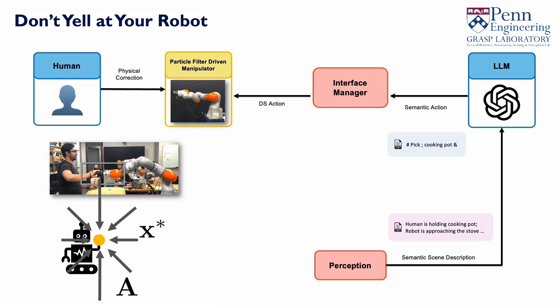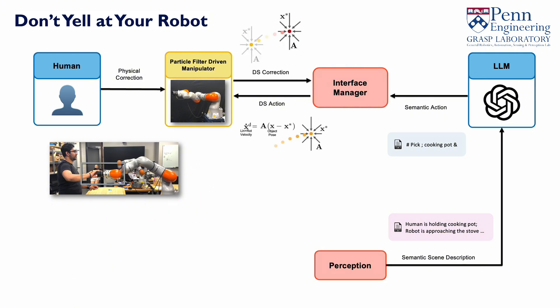During movement, a human can make physical corrections, which are parameterized by linear DS and used to re-estimate the desired intention with a particle filter. It is then included in the prompt to enhance future LLM interactions.